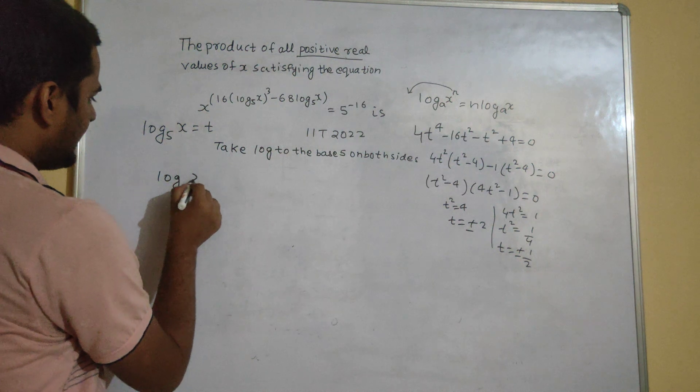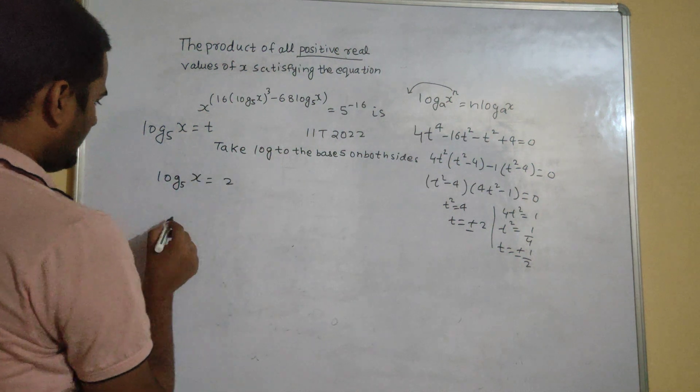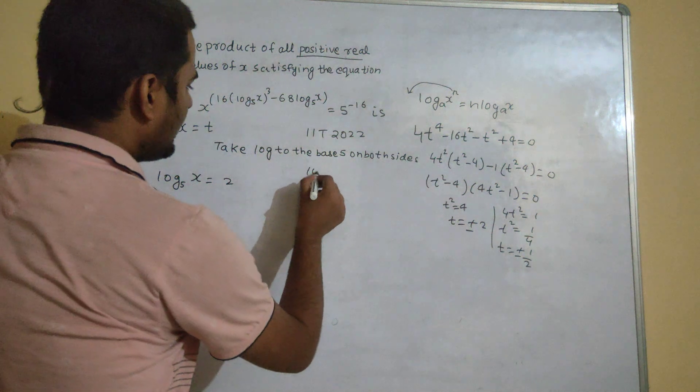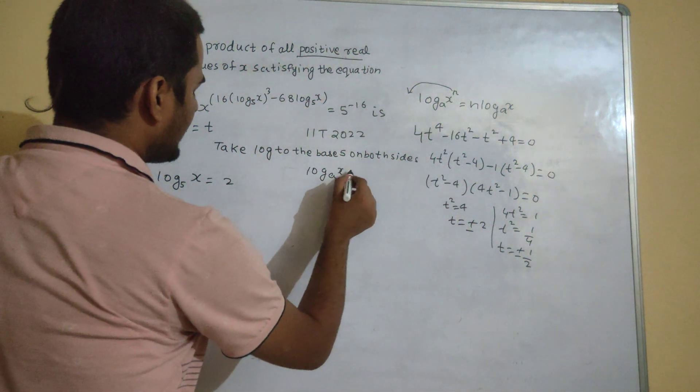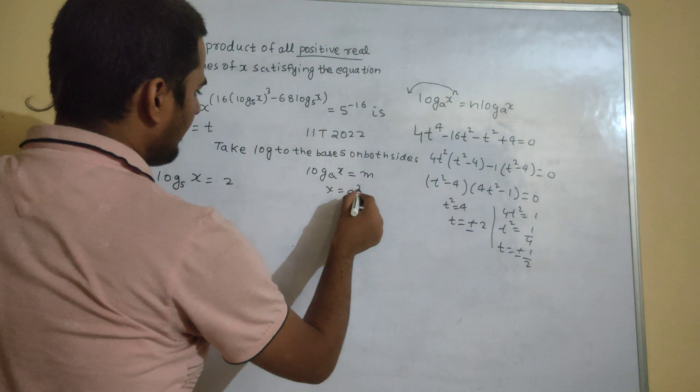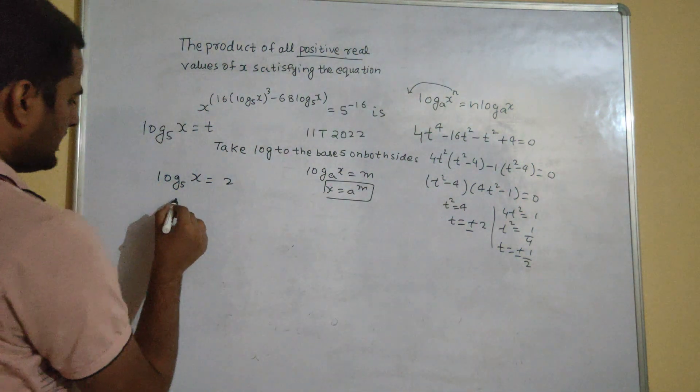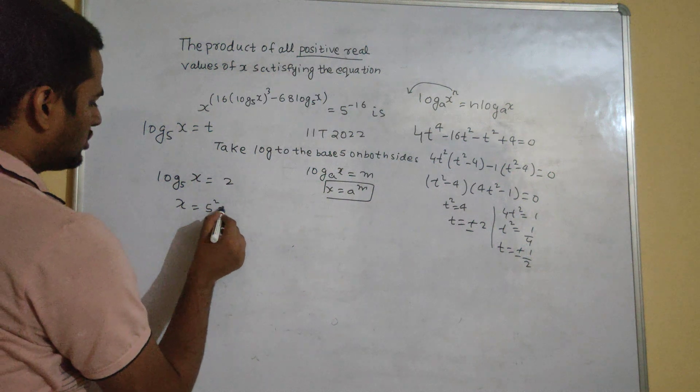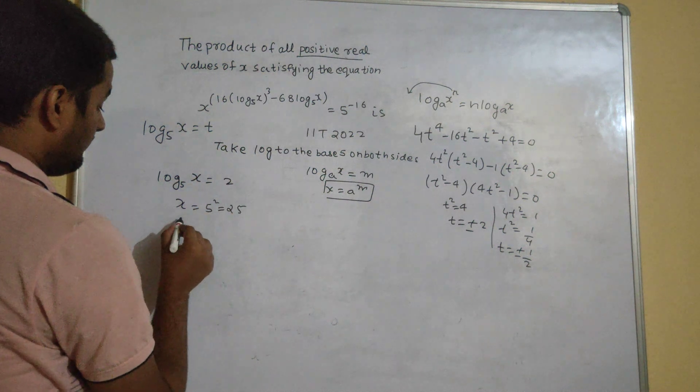Now t is plus minus 2 and plus minus half. What was t? Log x to the base 5 is 2, so you know that log x to the base a is, let's say m, so x becomes a power m, this is the property. So here x will be 5 power 2, which is 25, this is one value of x.